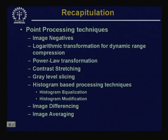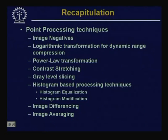The second operation we covered was logarithmic transformation for dynamic range compression. We used this because in some cases the dynamic range — the difference between the minimum and maximum intensity values — is so high that a display device cannot handle it. The logarithmic transformation reduces the dynamic range so the image can be displayed properly on a given display device.